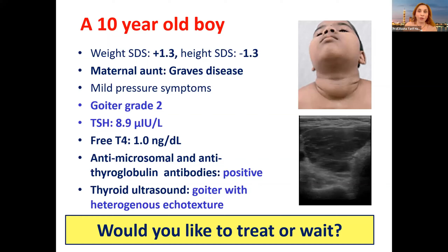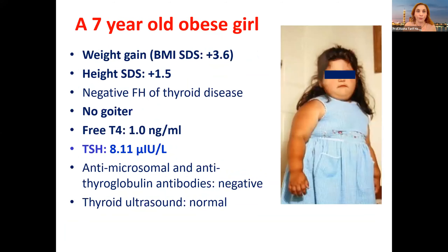This boy has a lot of risk factors. His height is in the low normal and his mother says he was growing better than this; he's starting to gain weight, has mild pressure symptoms, goiter, positive antibodies, and abnormal ultrasound findings. Yes, we should go to treatment, and so the boy was started on L-thyroxine.